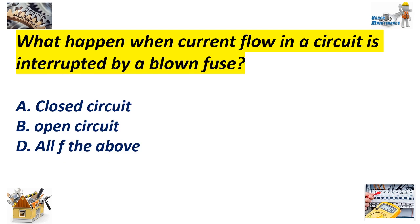What happens when current flow in a circuit is interrupted by a blown fuse? A. Closed circuit, B. Open circuit, D. All of the above. Answer: B, Open circuit.